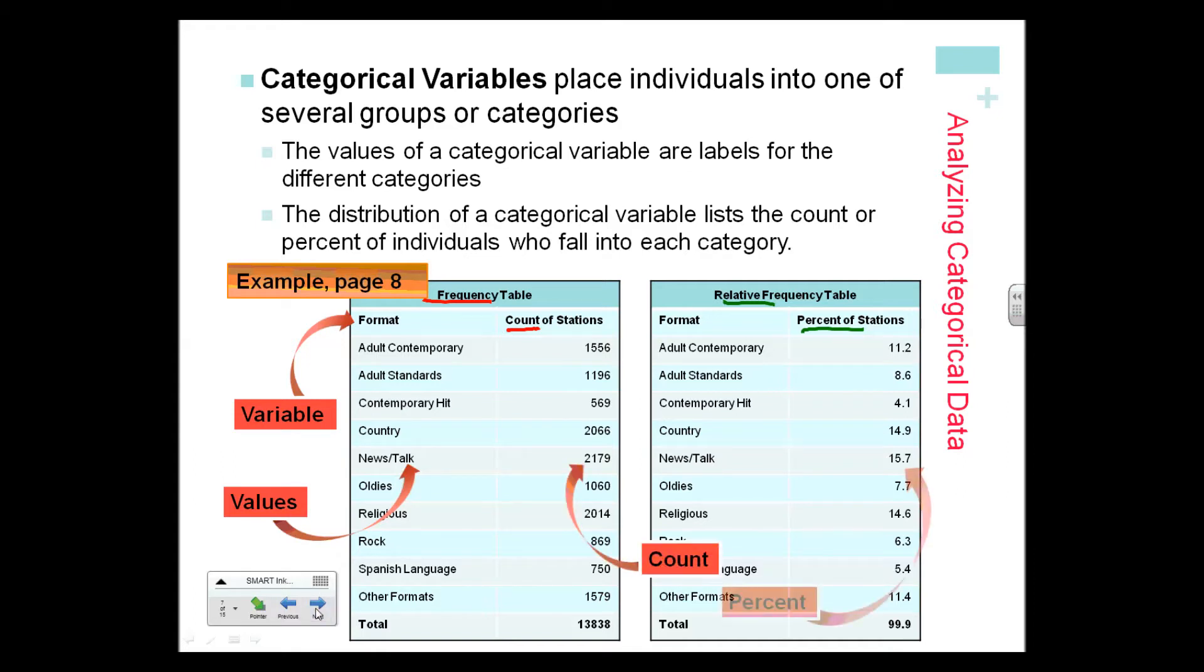A frequency table is counts. That is different from relative frequency, which is percent. Very important difference. It's always better to use percent because then you can make a better comparison. We've got our count on the left and our percent on the right. That count for news talk is 2,179 people.